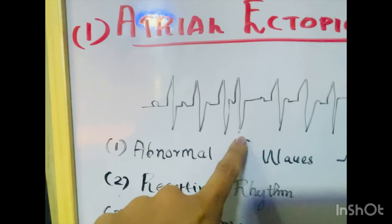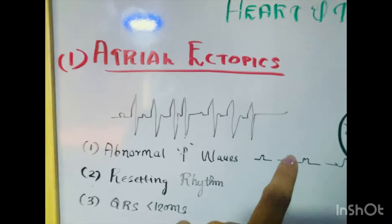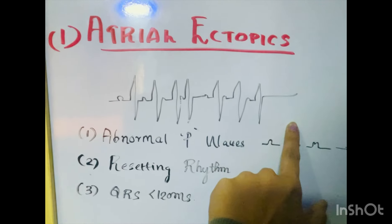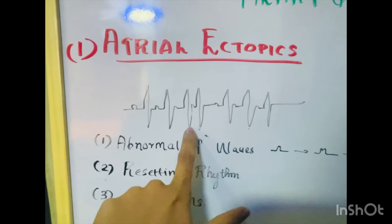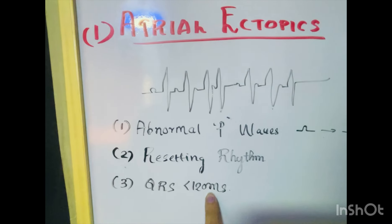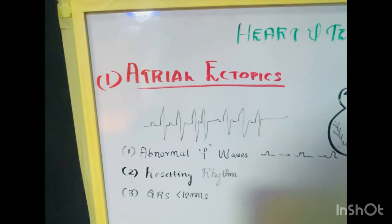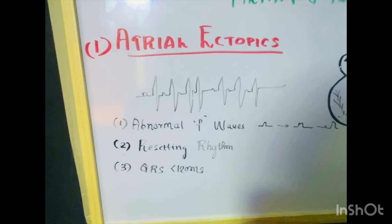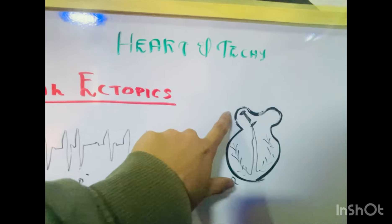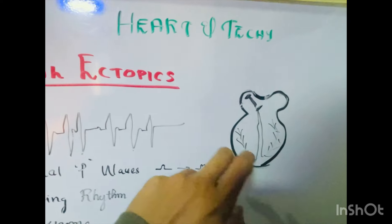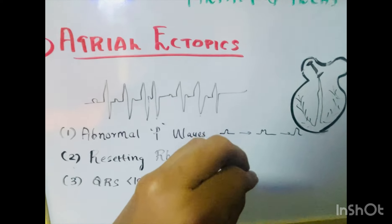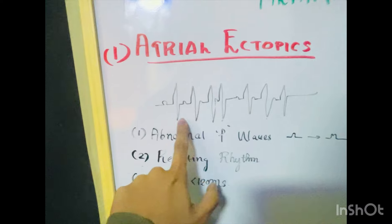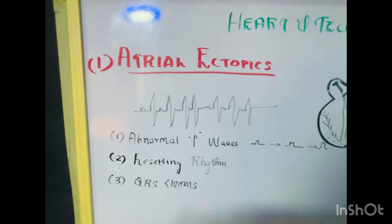The P-waves have different morphology because they are coming from a different area rather than the conduction system — that is what is meant by abnormal P-waves. The resetting of rhythm means even though the ectopic fires, the conduction system resets, and the rest of the rhythm will be normal. The QRS morphology will be less than 120 milliseconds — narrow QRS — because this extra atrial beat conducts normally into the ventricle, so there is no change in QRS morphology.